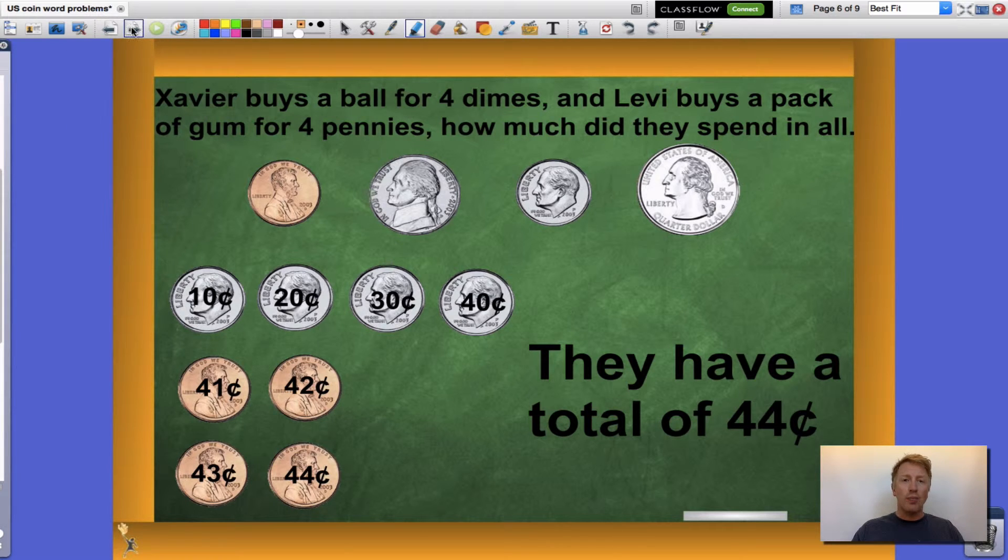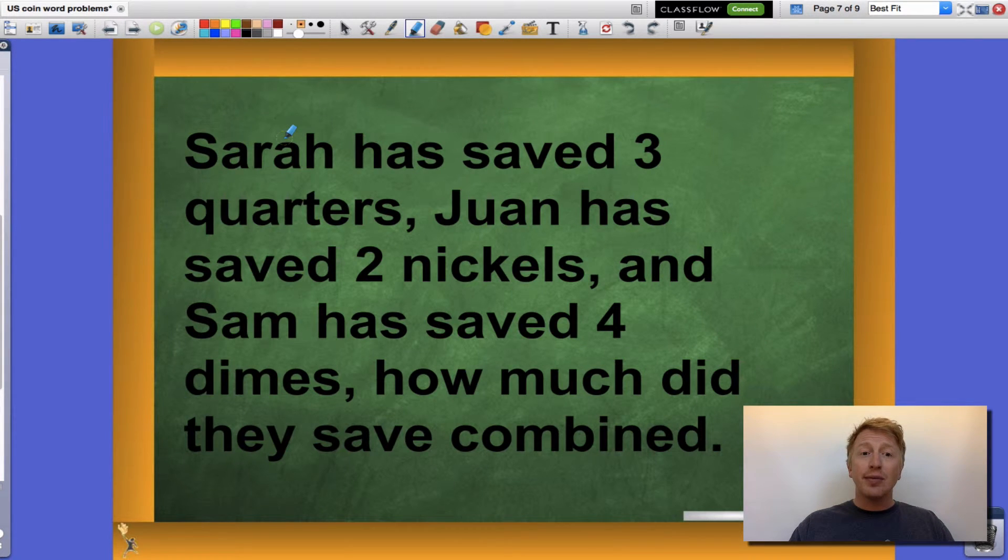One more problem. This one, a little bit trickier. Read along with me. Sarah has saved three quarters. Juan has saved two nickels. And Sam has saved four dimes. How much did they save combined? Now I have three different coins here. This is getting tough. Are there any signal words that can help me? Yeah there is. Combined. That lets me know that I am adding all of these coins together.